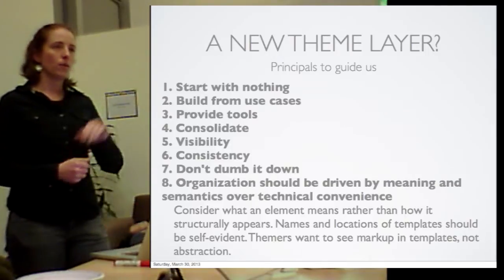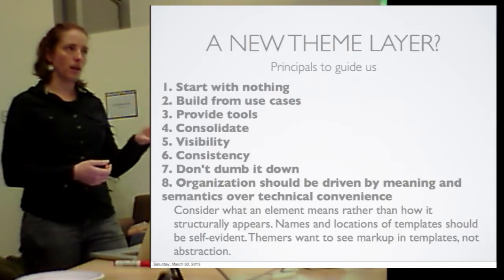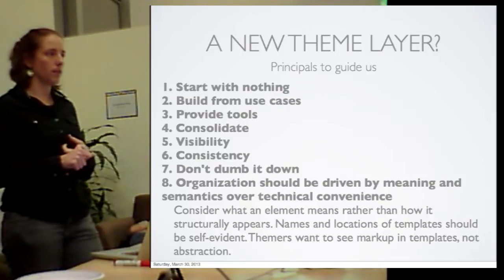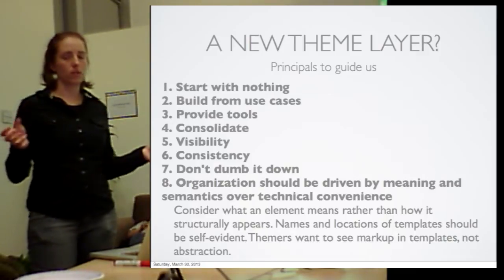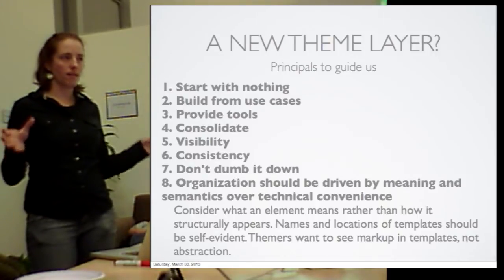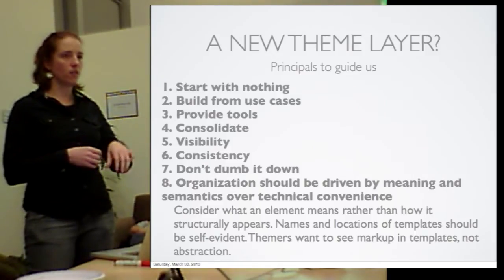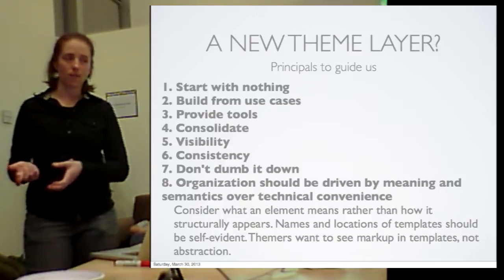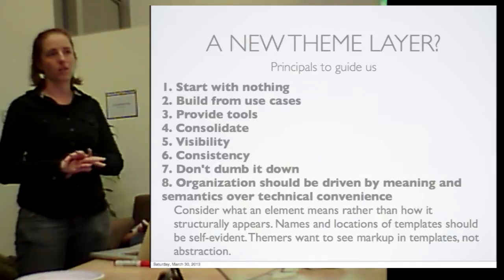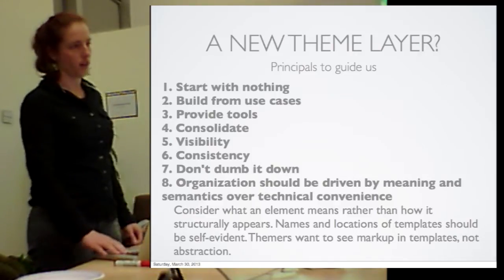This last principle is about organizing new components driven by semantic meaning rather than convenience. A lot of things in Drupal are written because developers are lazy — so something like theme_item_list handles both a ul and an ol tag. But semantically, an unordered list and an ordered list are really different things — HTML knows this, which is why they created separate elements. Just because they both have li tags inside doesn't mean the same theme function should be used for both. We need to make the way Drupal thinks about front-end code match the way front-end developers think about writing code.